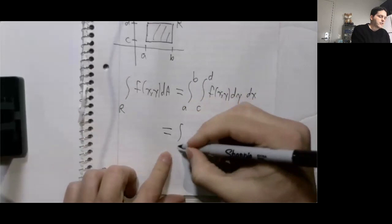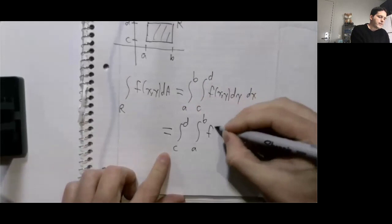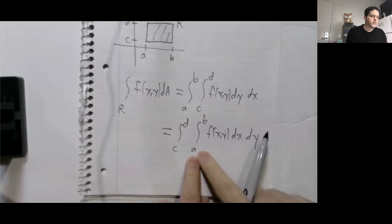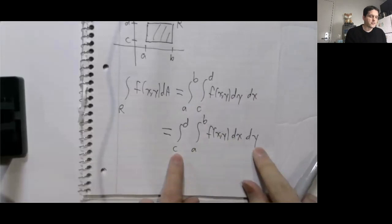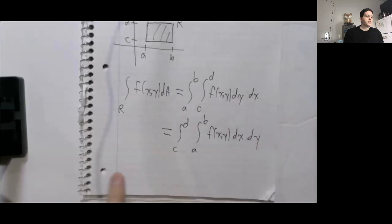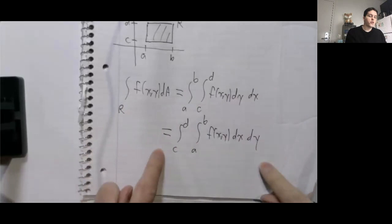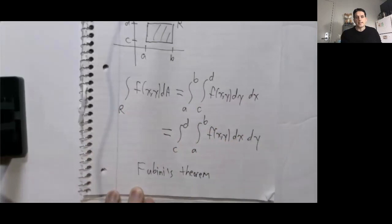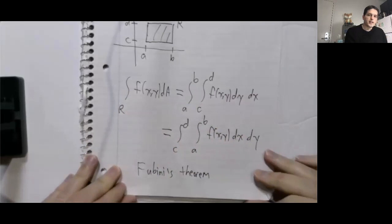It's equally true that this integral can be expressed as the integral from C to D of the integral from A to B of f of x, y dx dy. Notice now that in the inner integral, x goes from A to B and we're integrating with respect to x. The fact that this integral over R can be expressed either way is called Fubini's theorem.